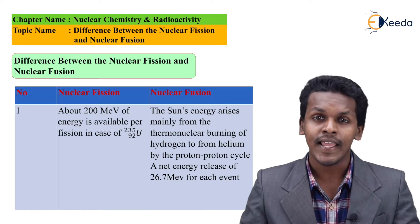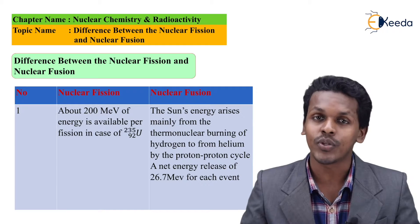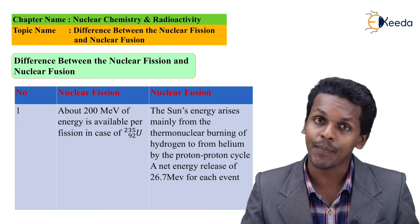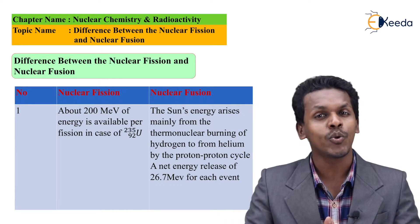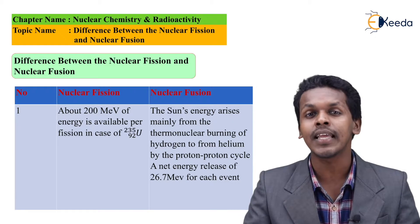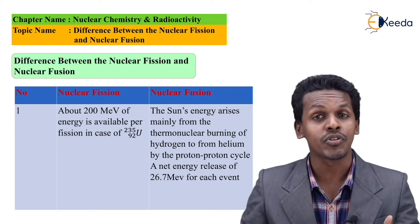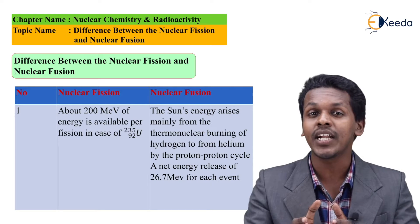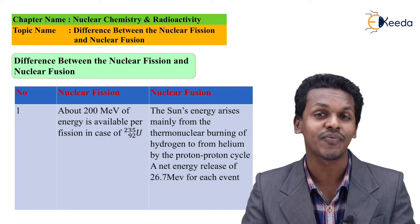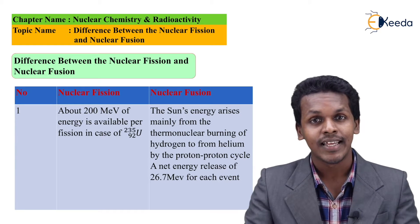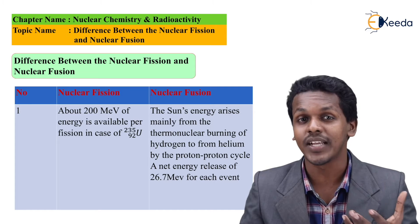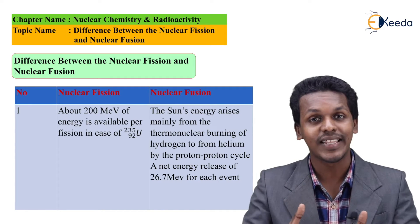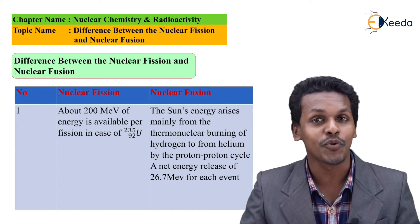In nuclear fission, suppose if we consider Uranium-235, the amount of energy released during a single fission is found to be 200 MeV. But if we compare nuclear fission and nuclear fusion, in nuclear fusion, whenever hydrogen combines with another hydrogen, the amount of energy produced is 26.7 MeV. But according to the mass, hydrogen creates more energy compared to that of Uranium-235. That shows that nuclear fusion creates more energy per unit mass.